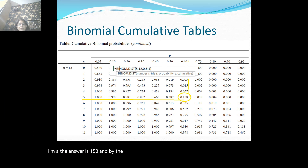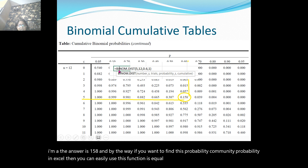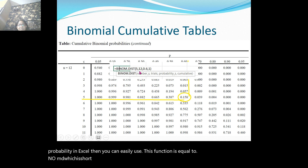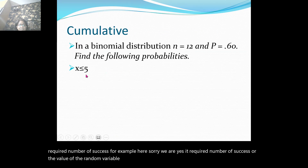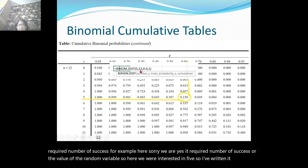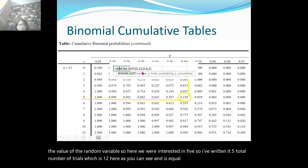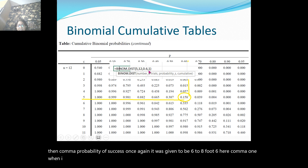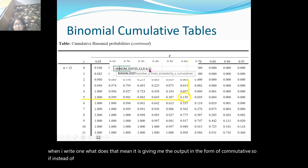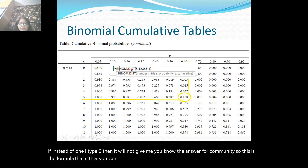If you want to find this cumulative probability in Excel, use the function =BINOM.DIST, which is short for binomial distribution. The arguments are: required number of successes (here 5), total number of trials (here 12), probability of success (here 0.6), and then 1 for cumulative output. If you type 0 instead of 1, it will not give the cumulative answer. So this Excel formula and the cumulative binomial table are equivalent methods.